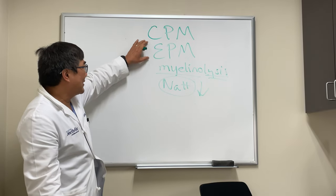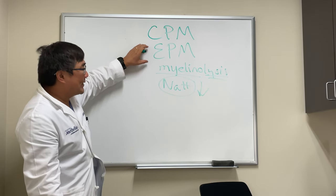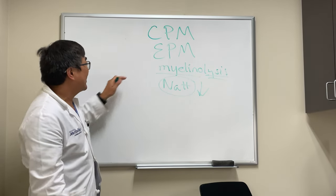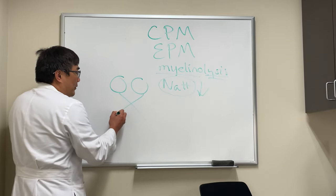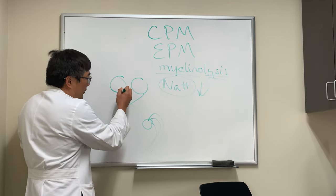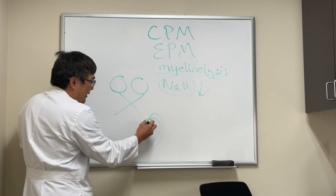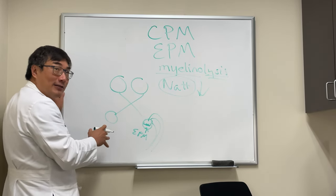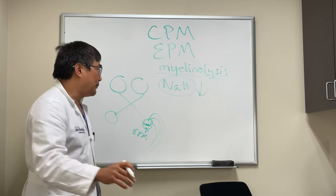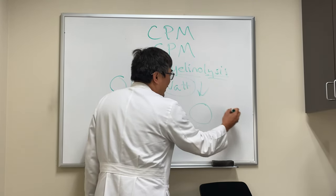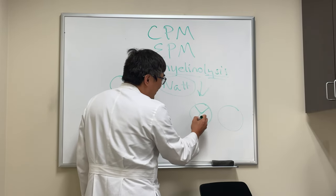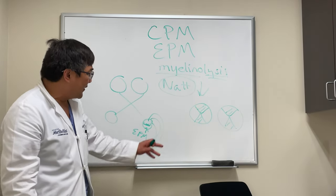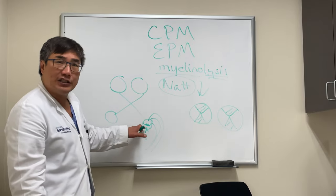Extra pontine myelinolysis, as opposed to central pontine myelinolysis, is afferent. The myelin that gets lysed is in the geniculate body. As you know, the visual pathway goes: optic nerve, chiasm, tract, LGN. Extra pontine myelinolysis can affect the geniculate body bilaterally, and the visual field defect from geniculate lesions can look like an hourglass. A bilateral hourglass field is very suggestive of a geniculate lesion.